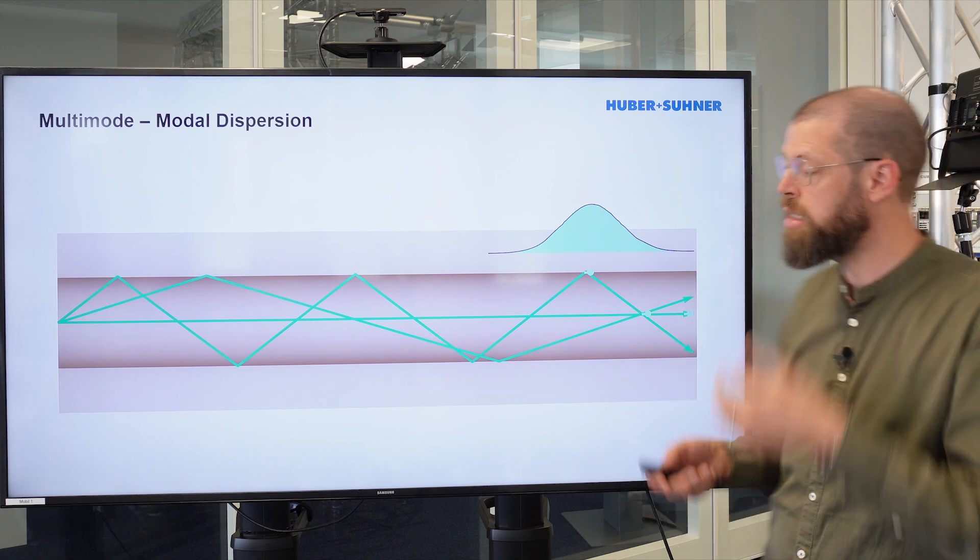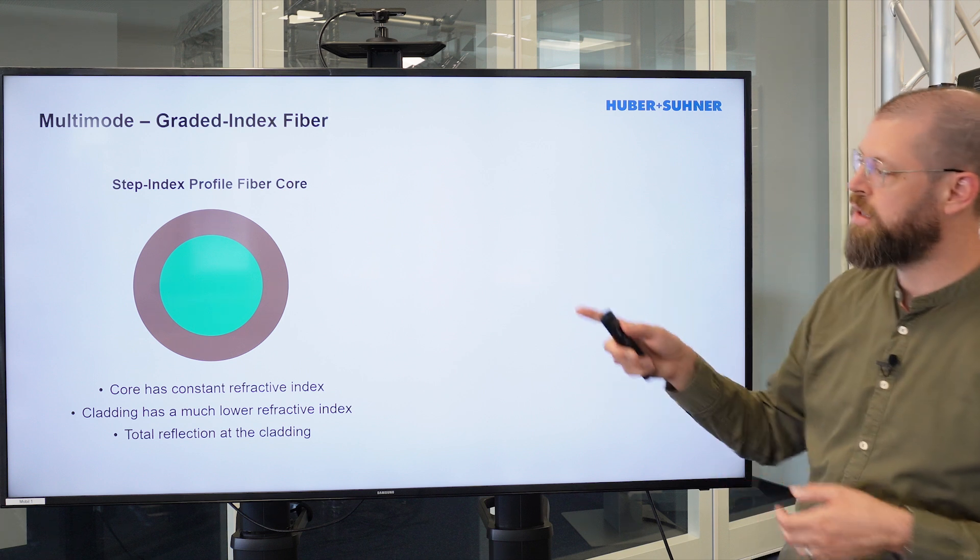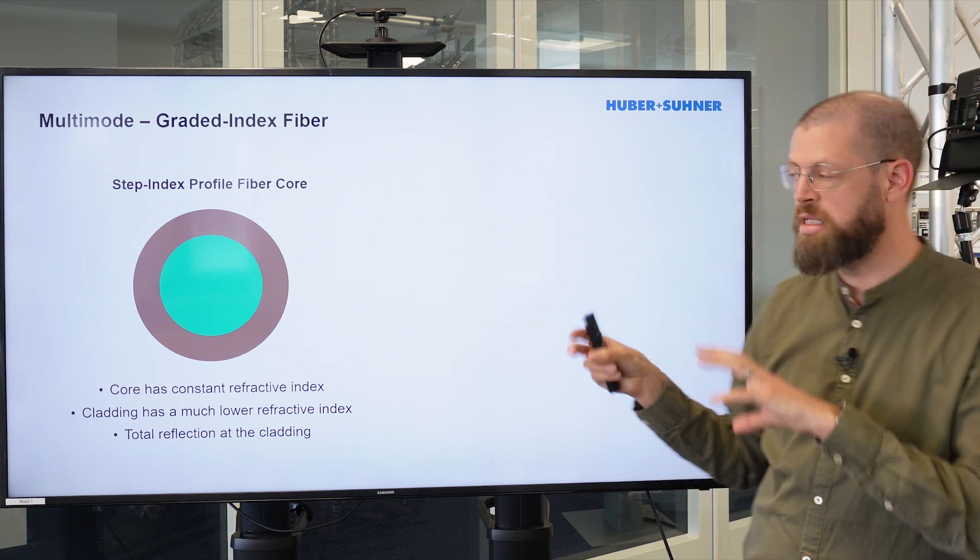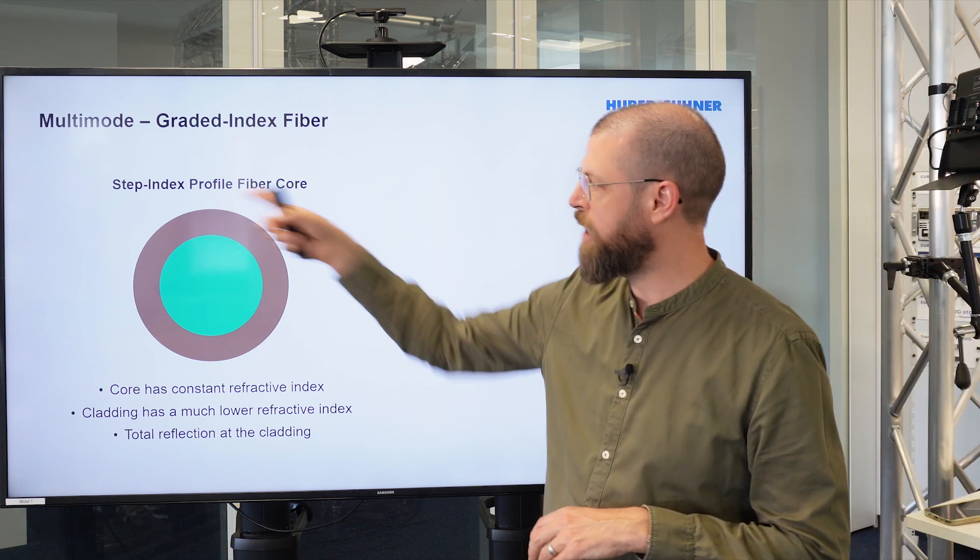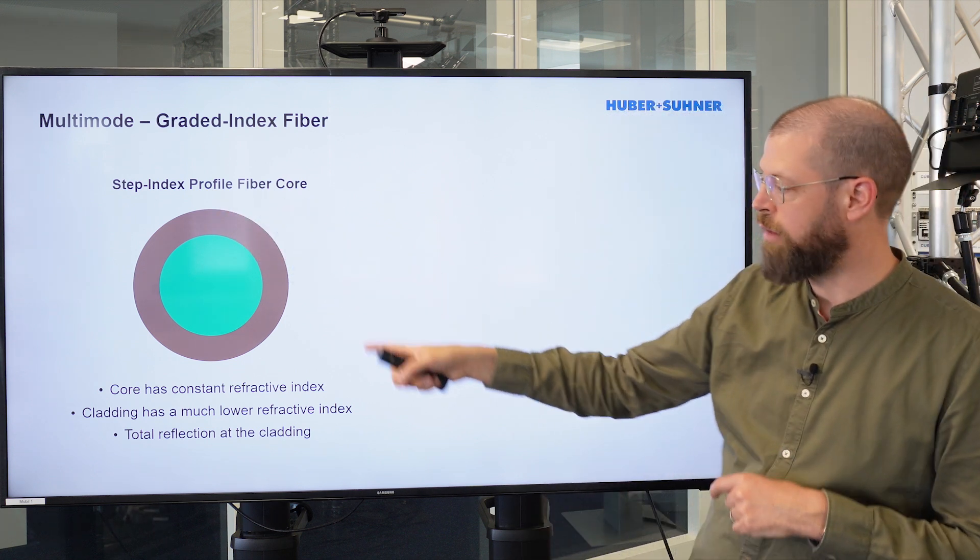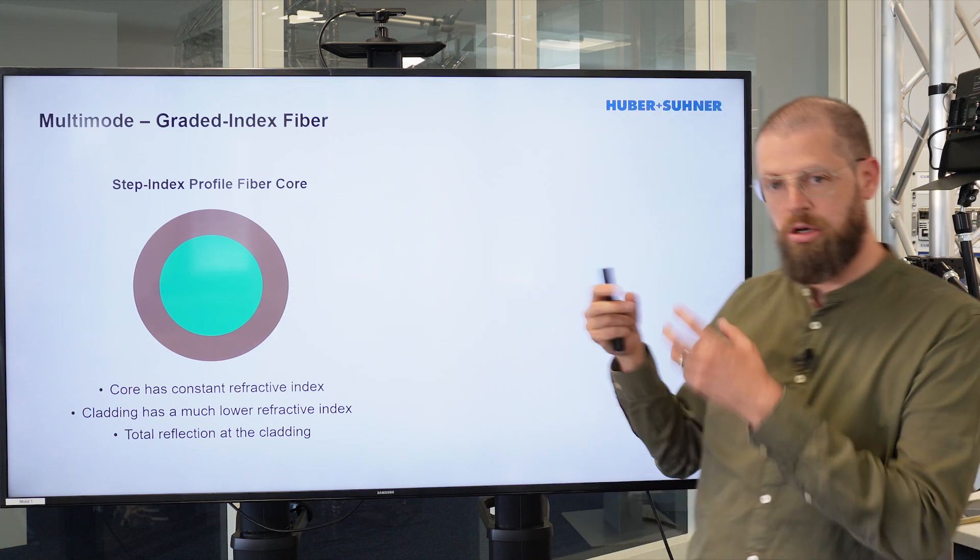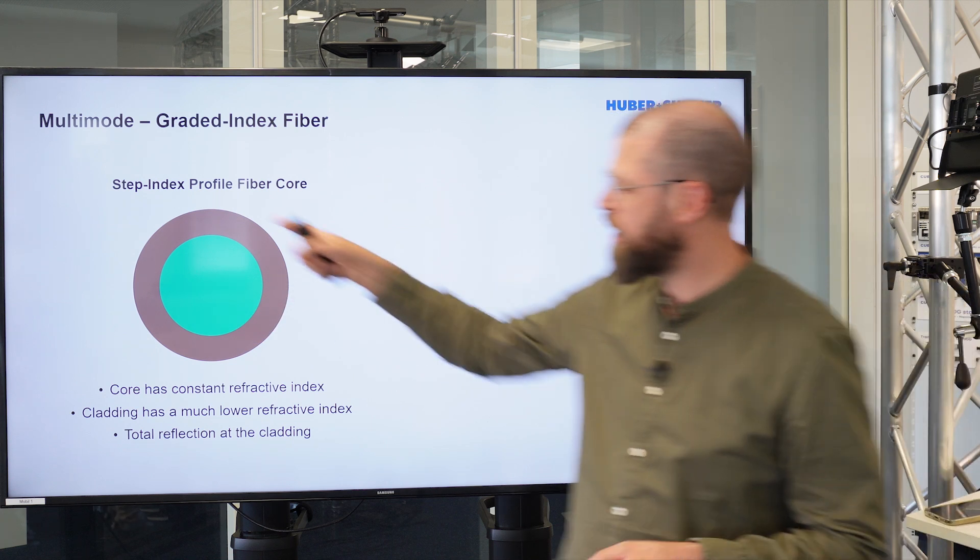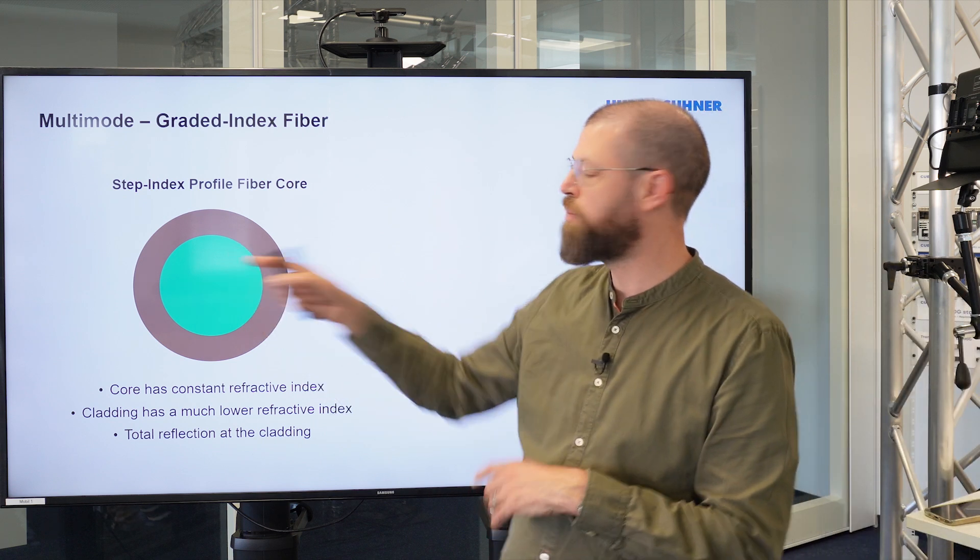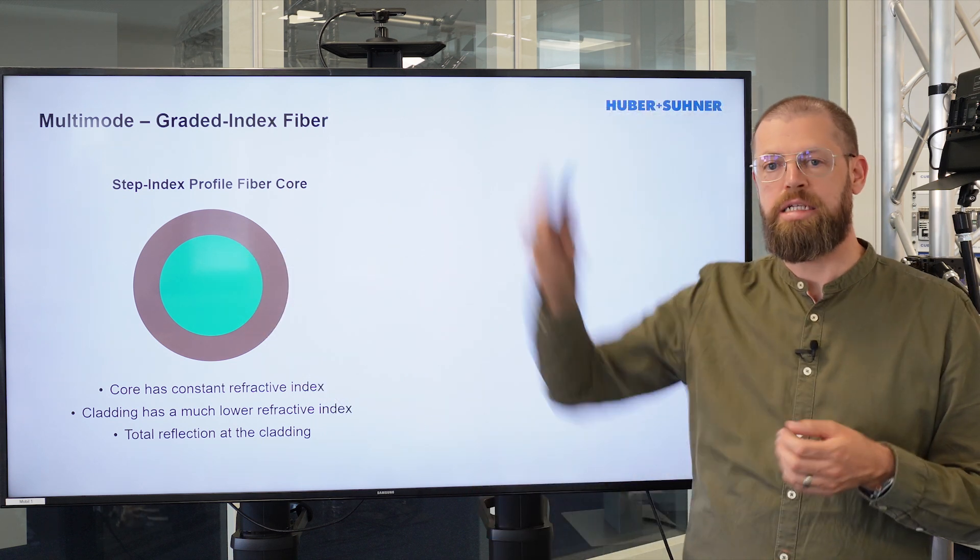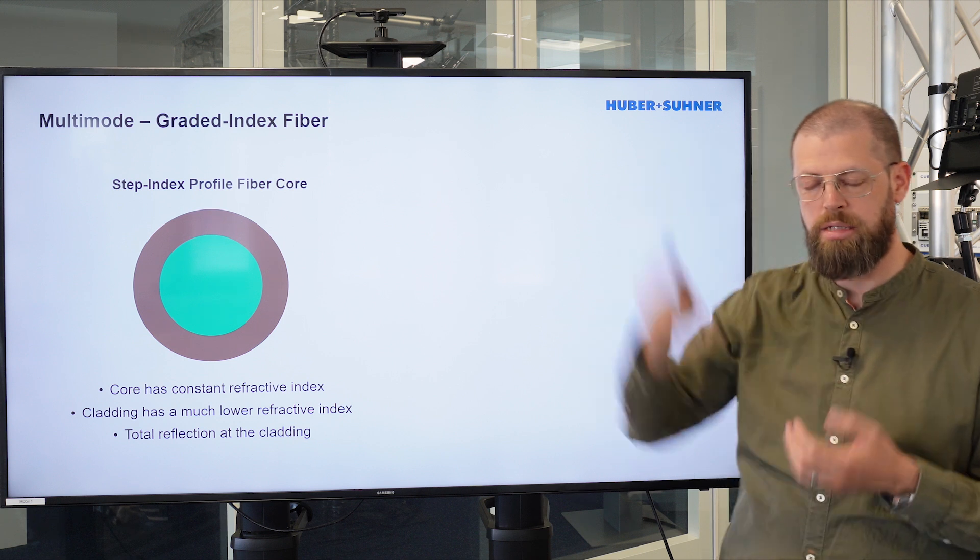So how can we compensate this? Well, to understand that, let's first have a quick look at the early designs of a multimode fiber cable. We had the step index profile, meaning the core had a constant refractive index, and the cladding had a much lower refractive index, meaning that the light passing through the fiber core experienced a total reflection when it hit upon the cladding.